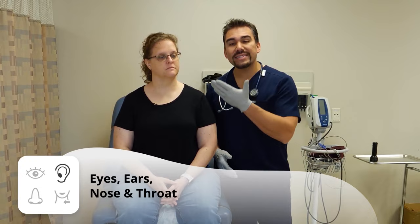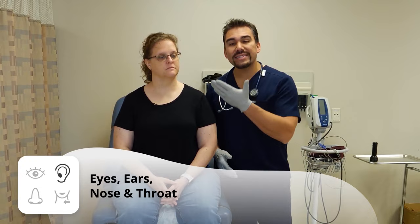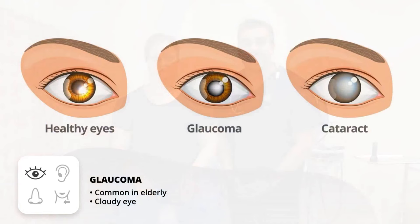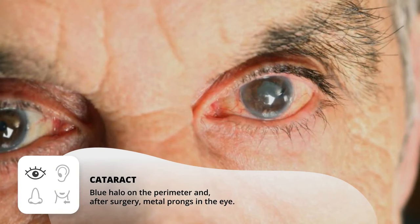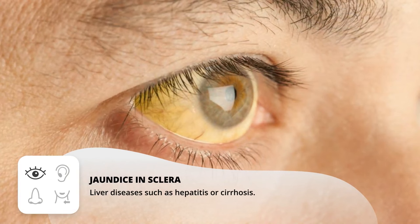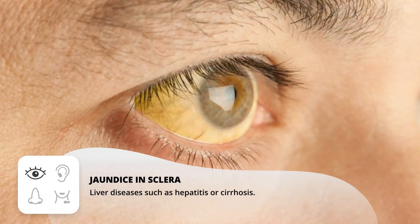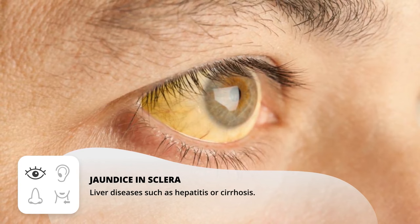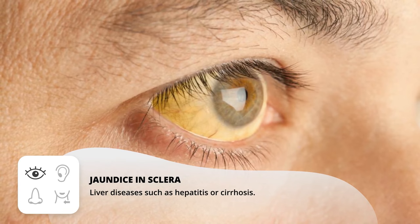For the eyes, ears, nose, and throat — the biggest thing with the eyes that you're probably going to see, especially with our elderly population, is glaucoma; you're going to see a cloudy eye. For cataracts, you'll see a blue halo on the perimeter of the eye. If the patient did have cataract surgery, it's going to look like metal prongs inside the eye. You might also see liver disease patients who are going to have jaundice in the sclera.